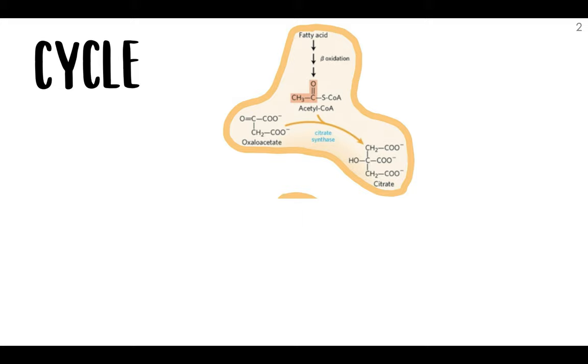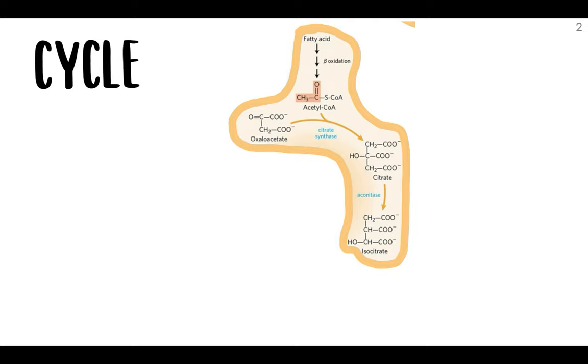First, acetyl-CoA condenses with oxaloacetate and forms citrate using citrate synthase. Then citrate is converted to isocitrate with aconitase, just like in the citric acid cycle.